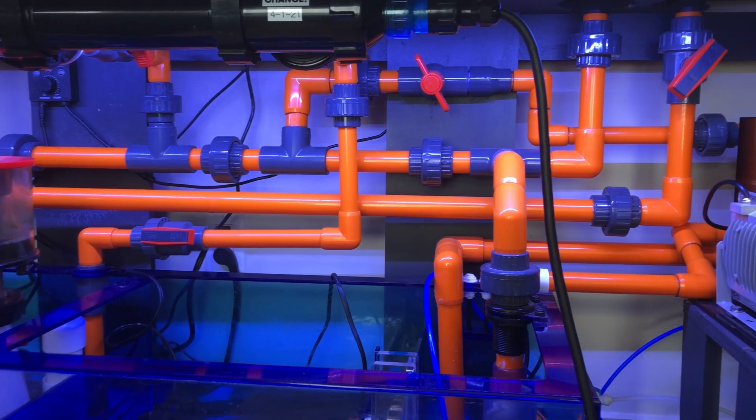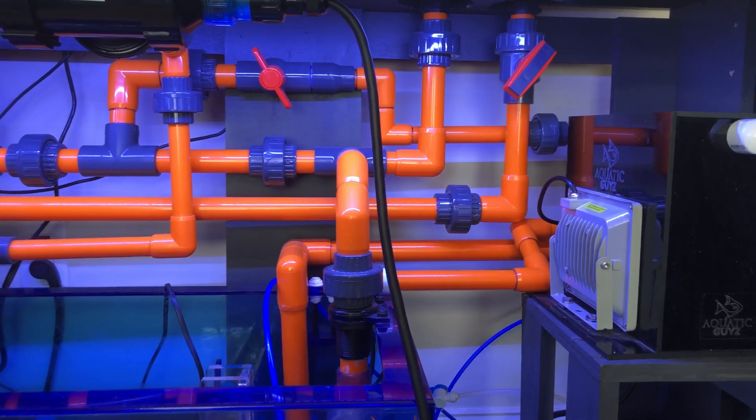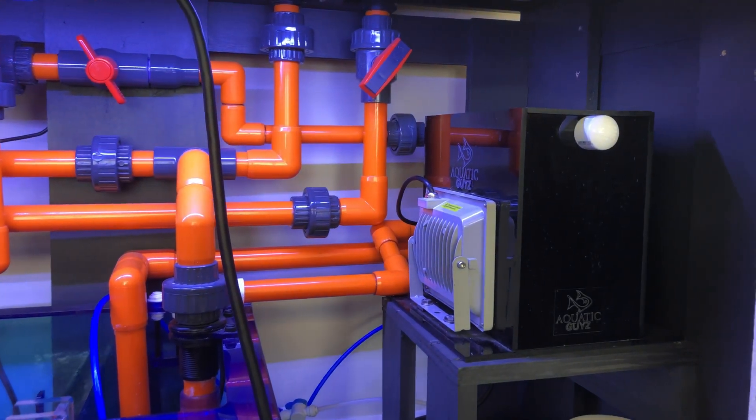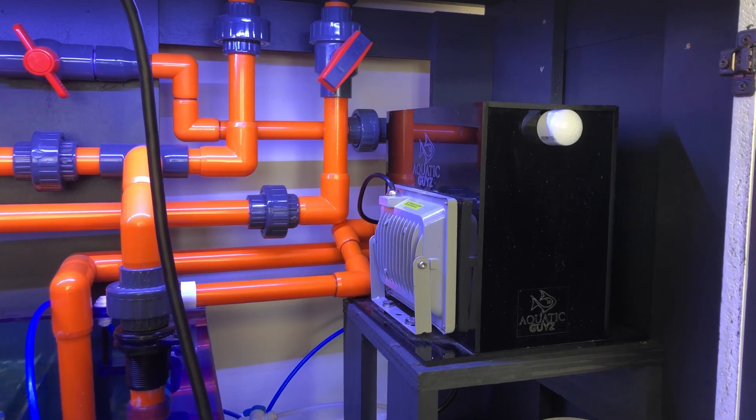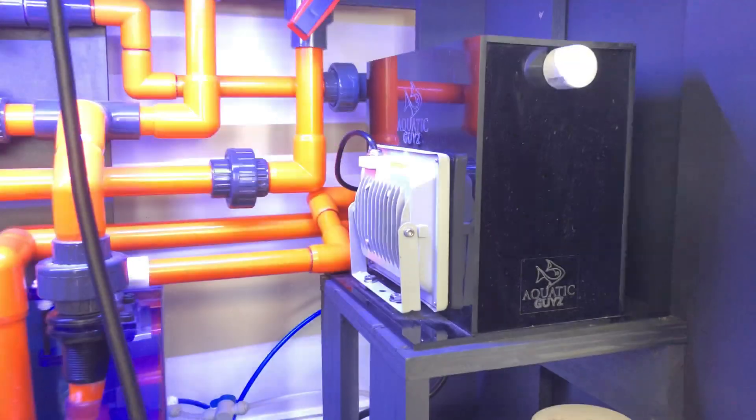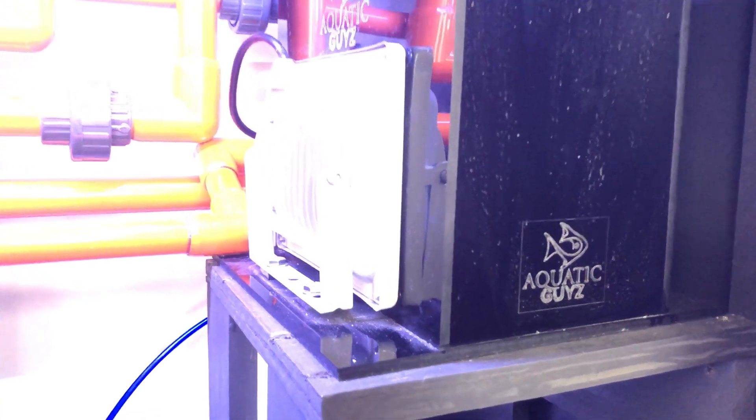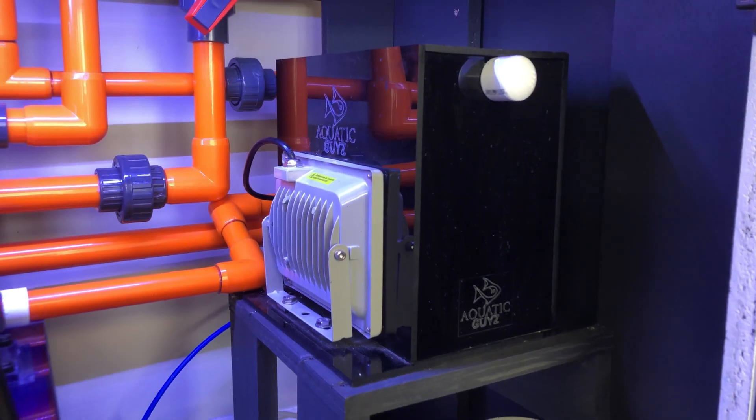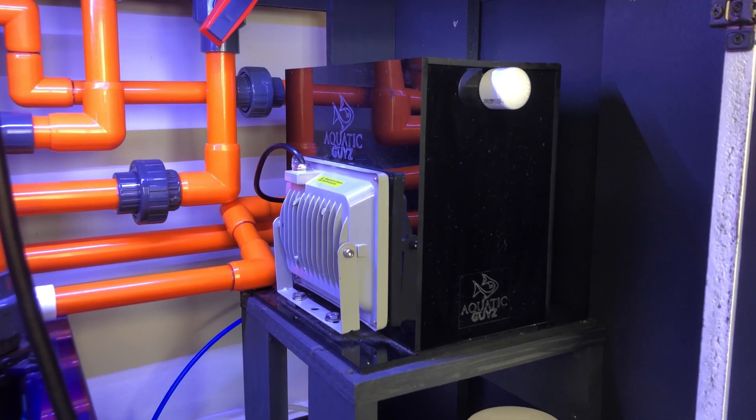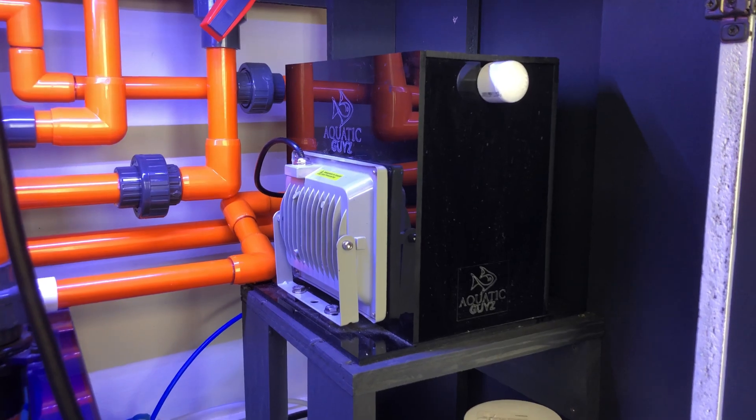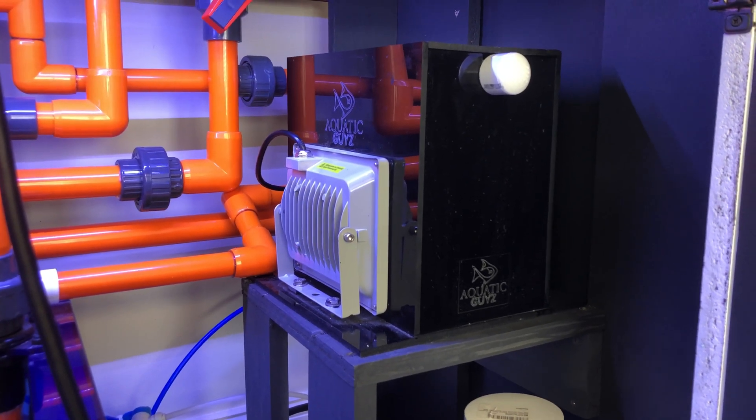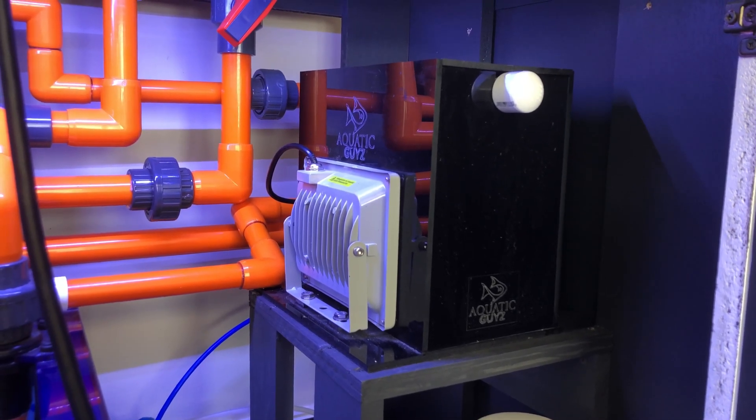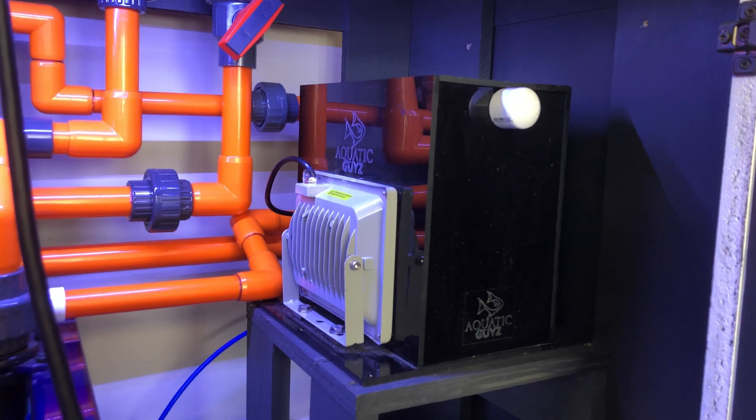Under the sump here, we're taking a look at the algae scrubber over here to the right, the black acrylic box. There are many types and brands of algae scrubbers out there. This one in particular is made by Aquatic Guys. I purchased this one on eBay, but you can also go to their website. This one comes in many different sizes. This is the second to largest size, called the AGS 250, which is plenty for this 210 gallon tank.